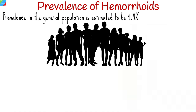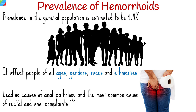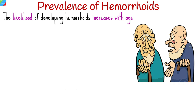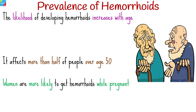Worldwide, the overall prevalence of hemorrhoids in the general population is estimated to be 4.4%. Hemorrhoids affect people of all ages, genders, races, and ethnicities. They are one of the leading causes of anal pathology and the most common cause of rectal and anal complaints. The likelihood of developing hemorrhoids increases with age, affecting more than half of people over age 50, and women are more likely to get hemorrhoids while pregnant.